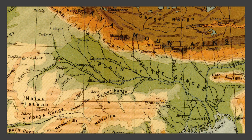The Chambal and the Betwa also originate from the Malwa Plateau of Central India and are major tributaries of the river Yamuna. Together, these rivers make the Ganga Plain one of the most fertile and most extensive plains, where a large number of people reside. These plains have a very high population because of favourable temperature, fertile soil, easy communication, and the availability of adequate water.